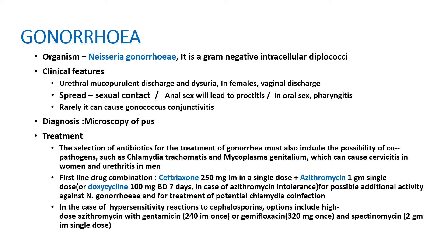Gonorrhea is a gram-negative intracellular diplococcus. Clinical features include mucopurulent discharge from the urethra and severe dysuria. In female patients, it can present with vaginal discharge. Spread is mainly through sexual contact. Anal sex can produce proctitis, oral sex can produce pharyngitis, and rarely it can produce gonococcal conjunctivitis or reactive arthritis. Diagnosis is mainly by culture or microscopy.